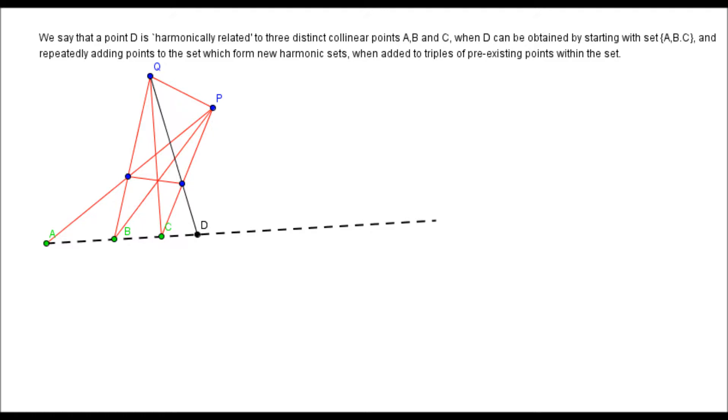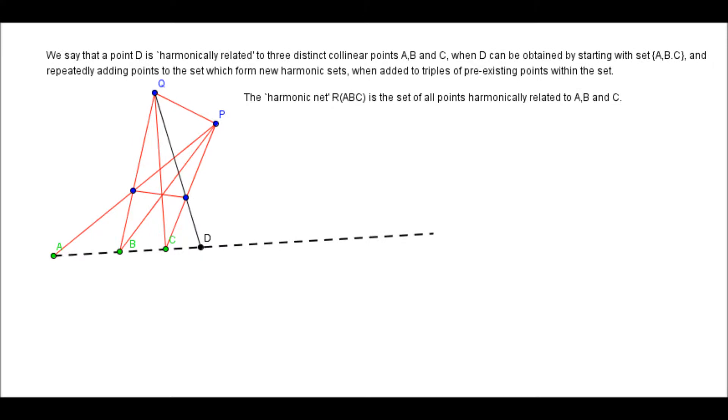Well, what we can do then is we can just continue that idea of taking this set of points, A, B, C, then we'll add an extra point D that forms a harmonic set together with A, B and C. And then we can take three more points from our set, any three points, and we can find a fourth point to go with those to form another harmonic set and so on and so forth. We can just carry on taking a triple from our set and adding an extra point to that triple to generate a new harmonic set and including that extra point in our new enlarged set.